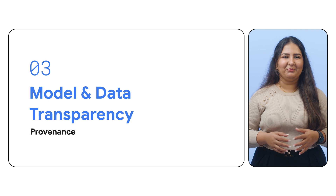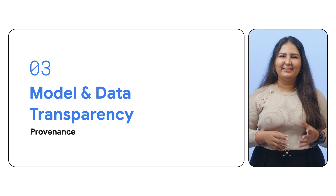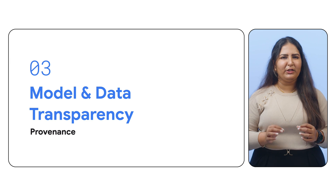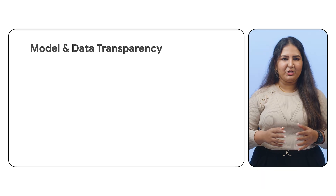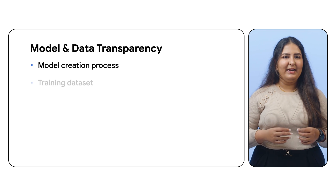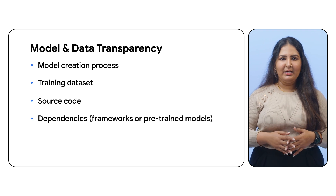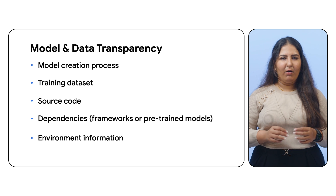Let's talk about model and data transparency. The AI model itself is a bit like a mysterious black box. It can make predictions and decisions, but it doesn't inherently reveal why or how it arrived at those outputs. To truly understand and trust an AI model, we need to shed light on its inner workings. That's where model and data transparency comes in. It captures a model's origin, how it was created, training data source and its transformations, which source code was used, what dependencies or pre-trained models were leveraged, and the environment it was trained on. All this information is captured in a provenance document. It helps identify potential biases, catches any attempts at data or model poisoning, and maintains integrity. It also ensures regulatory compliance and enables effective audits.